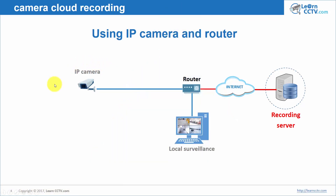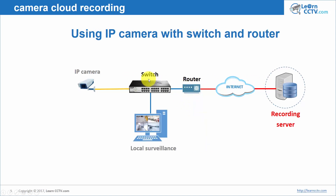Here's what I have: an IP camera with an SD card inside, recording directly in the camera. I can then send this video through the internet and record on my remote server. I can also see the videos locally from the camera live or from the SD card installed in the camera, and I can see what's recorded on my remote server. Here's the same situation now with the IP camera using a switch and the router. Same way you can have access to everything locally or remotely.